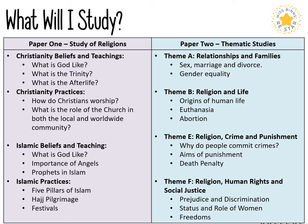Theme E looks at religion, crime and punishment — why people commit crimes, the reasons behind that, the aims of punishment, the different types of punishments that can be used, and arguments for the use of the death penalty. The last theme is religion, human rights and social justice, where we look at key ideas around prejudice and discrimination towards groups of people, the status and role of women within society and how that has changed over time, and then looking at freedoms, particularly religious freedoms.